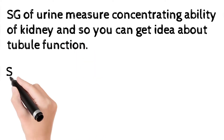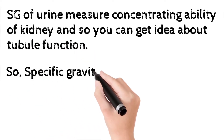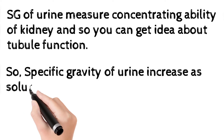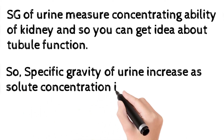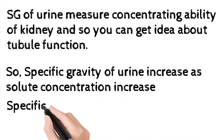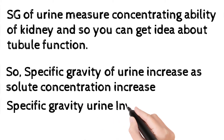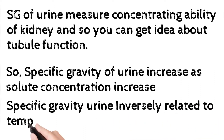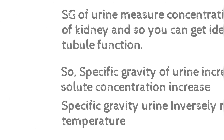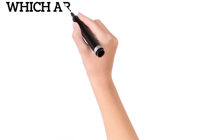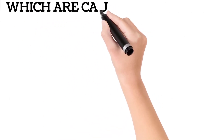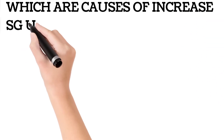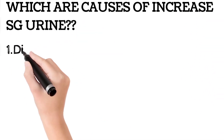Specific gravity of urine measures the concentrating ability of the kidney, so you can get an idea about the tubular function of your kidney. Specific gravity of urine increases as the solute concentration increases in the urine. The specific gravity of urine is inversely related to temperature but directly related to solute concentration.